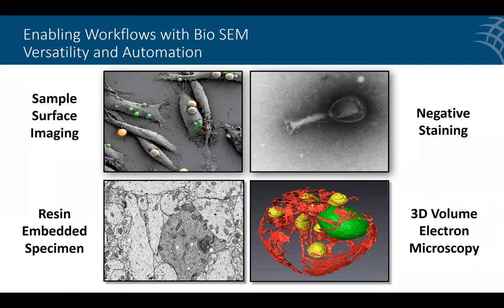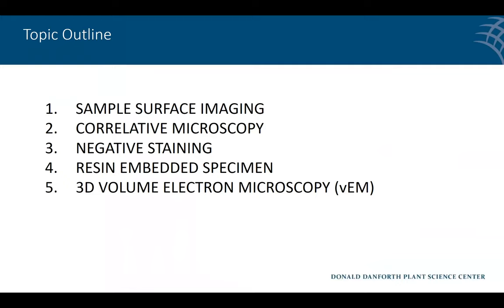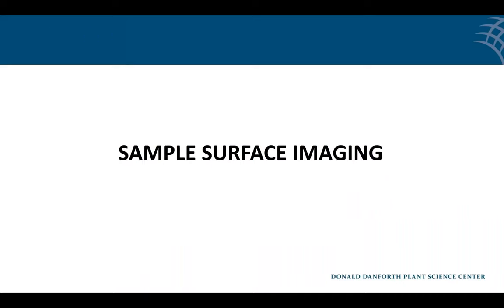SEMs are also very good at automation. When you're collecting repeated types of experiments, lots of sections, or large areas of your sample, within a few minutes you can set it up to perform those, walk away, and the system will do it in an automated way. The main techniques we'll talk about today are sample surface imaging, correlative microscopy, negative staining, resin embedded specimen techniques, and 3D volume EM.